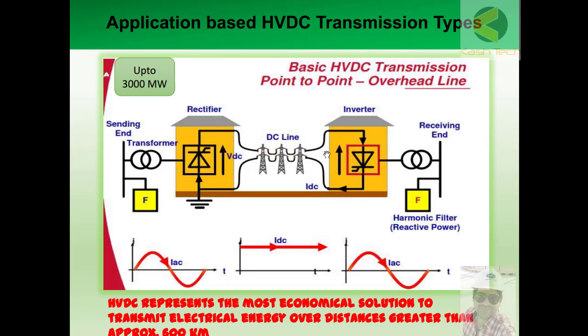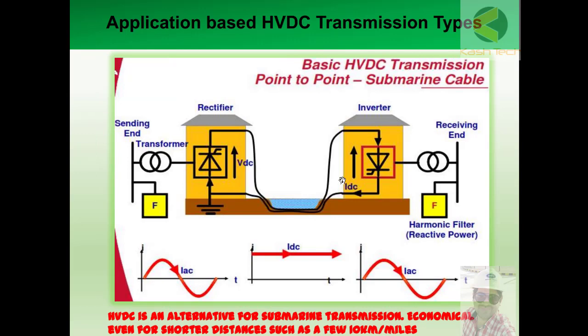HVDC is always preferred for longer distances and higher power transmission requirements. It is also more environmentally friendly — a green technology — because you only need to install fewer towers, and it is economical as well. Another application of HVDC transmission systems is submarine cable transmission.